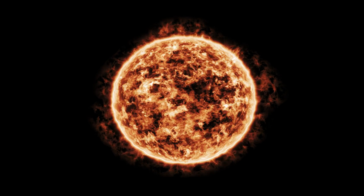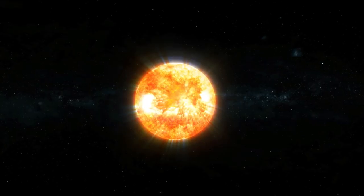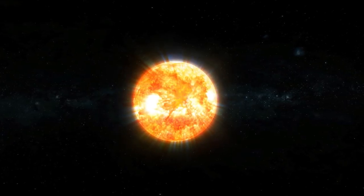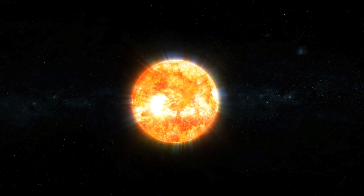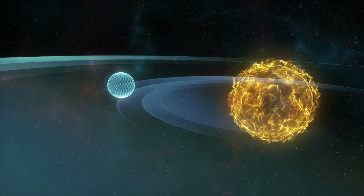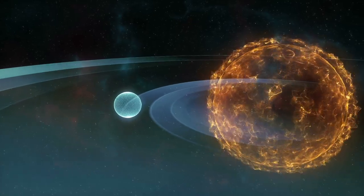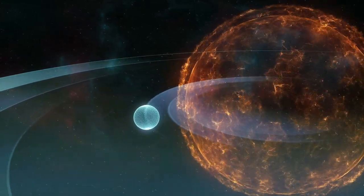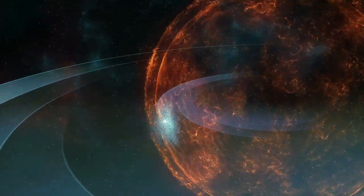When the sun has burned all its hydrogen, it will continue to burn helium for 130 million more years. During this time, it will expand to the point that it will engulf Mercury, Venus, and the Earth. At this stage, it will have become a red giant.